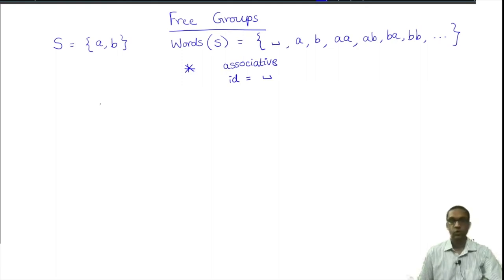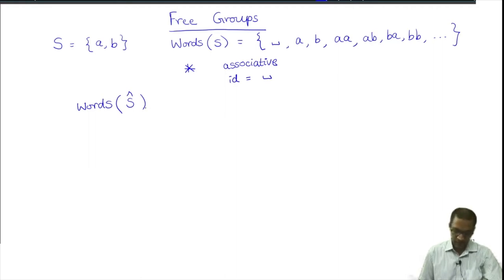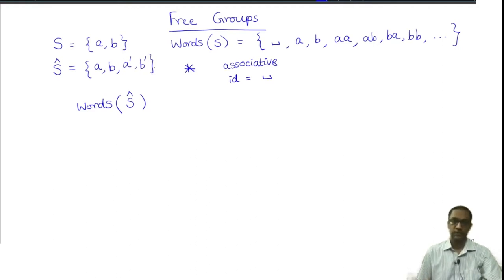How do we make this a group? The first requirement for a group is inverses, and we notice that no element of this set has inverses except for the identity itself, which is its own inverse. In particular, a and b, the two basic words of length 1, do not have inverses. Let us try to construct inverses. The key idea is that instead of looking at words in the alphabet S, we look at words in an augmented alphabet Ŝ. I am going to enlarge the set S: there is a, b, and I will put in two more elements which I will call a prime and b prime. These will eventually perform the role of the inverses.